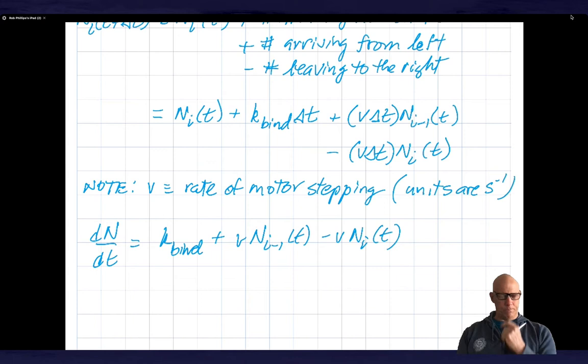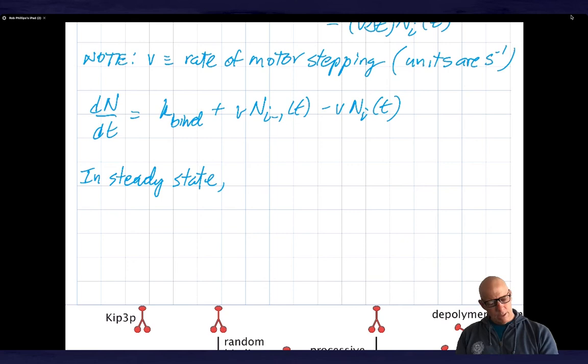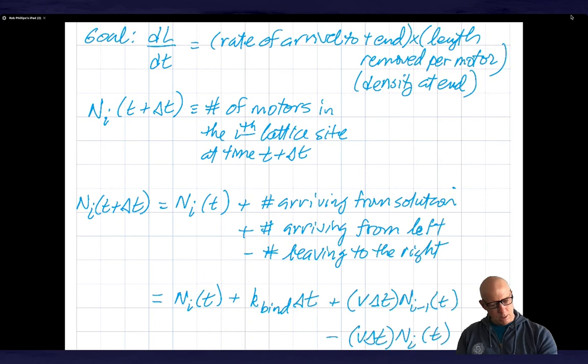And in steady state, I can think of this then as being given by, in steady state, this tells me that I have k_bind over v is going to be equal to n_i minus n_i minus one.